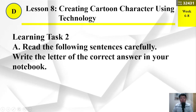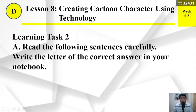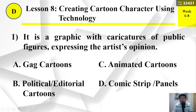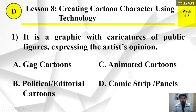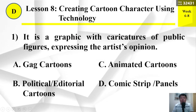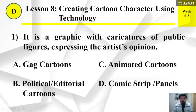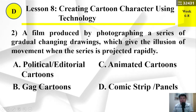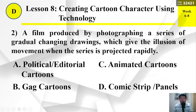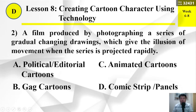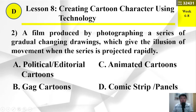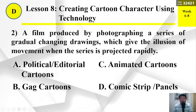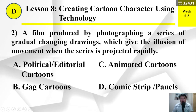Learning Task Number 2: Read the sentences carefully and write the letter of the correct answer in your notebook. Number 1: It is a graphic with caricatures of public figures expressing the artist's opinion — (a) gag cartoons, (b) political/editorial cartoons, (c) animated cartoons, or (d) comic strip panels. Number 3: A film produced by photographing a series of gradually changing drawings which give the illusion of movement when projected rapidly — (a) political/editorial cartoons, (b) gag cartoons, (c) animated cartoons, or (d) comic strip panels.